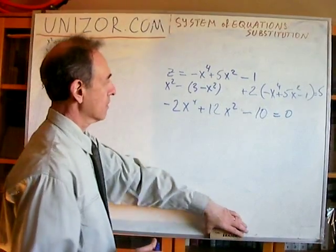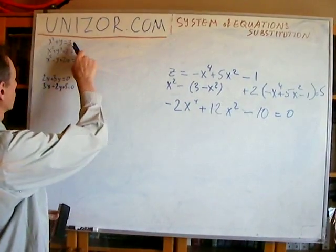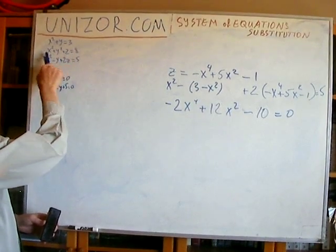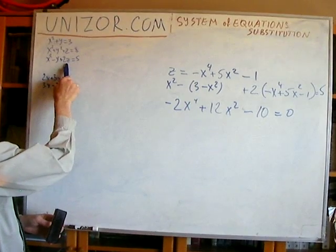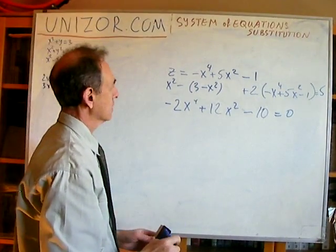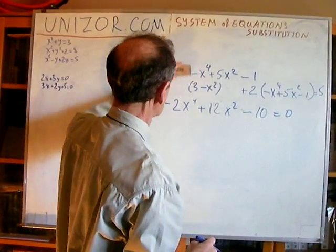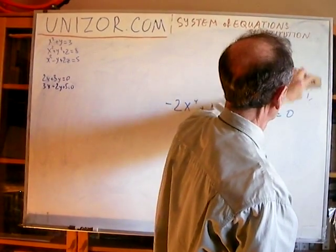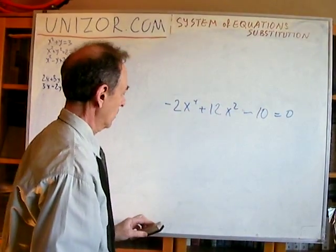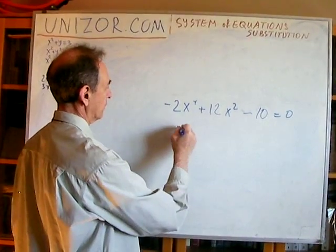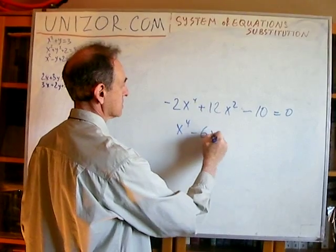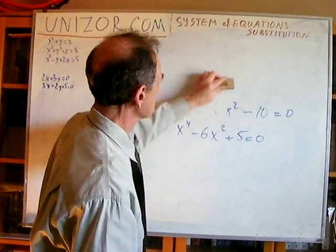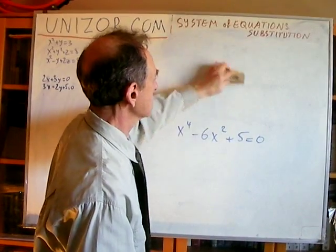After these two substitutions — first I took y from the first equation and substituted into the second and third, then I took z expressed in terms of x and substituted — I get one equation with only one variable x. Reducing by minus 2, I have: x to the fourth minus 6x squared plus 5 equals 0. That's my equation containing only x. This is the result of two substitutions.